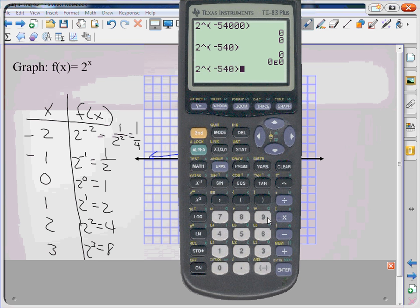It's actually too small for the calculator to figure it out. So what is two to the negative 54? It's really, really, really, really, really, really small. That's what it is. It doesn't reach zero. It gets really, really close, but it never does hit zero.